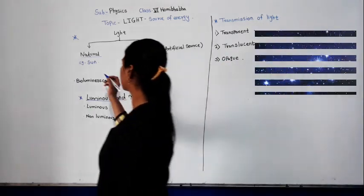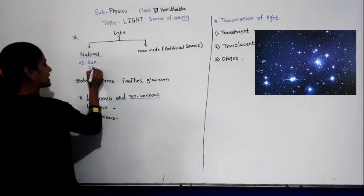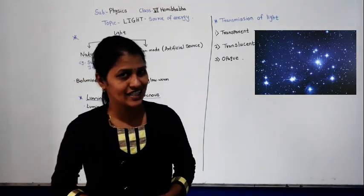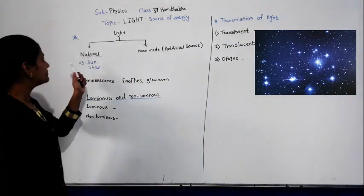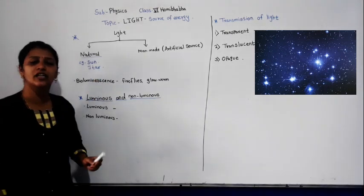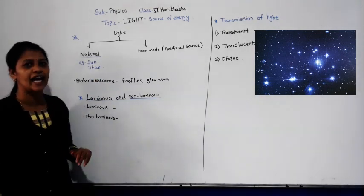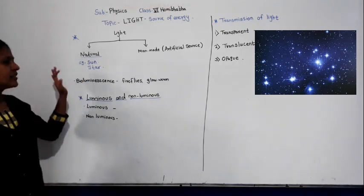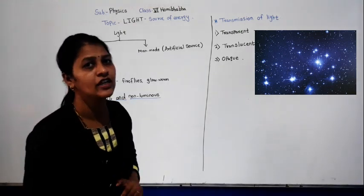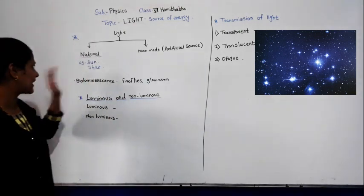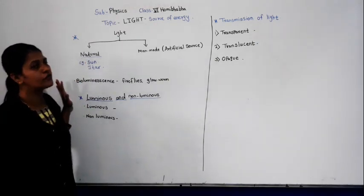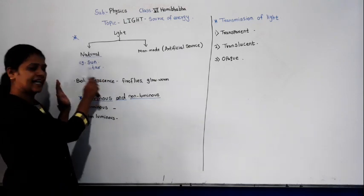Can you give another example of natural light? Stars. Stars are a natural source of light. At night, we can see the twinkling of the stars. There are some stars brighter than the sun which twinkle at night. So both the sun and stars are natural sources of light — light which we get from nature.